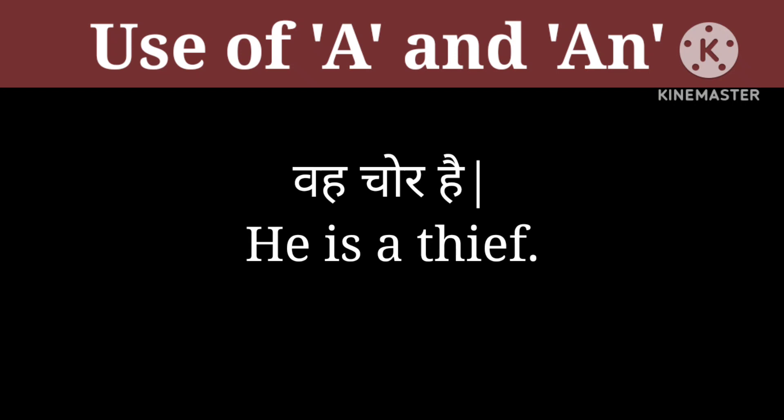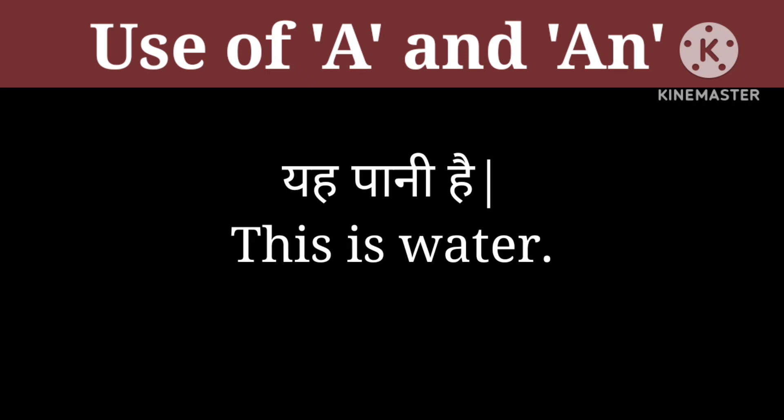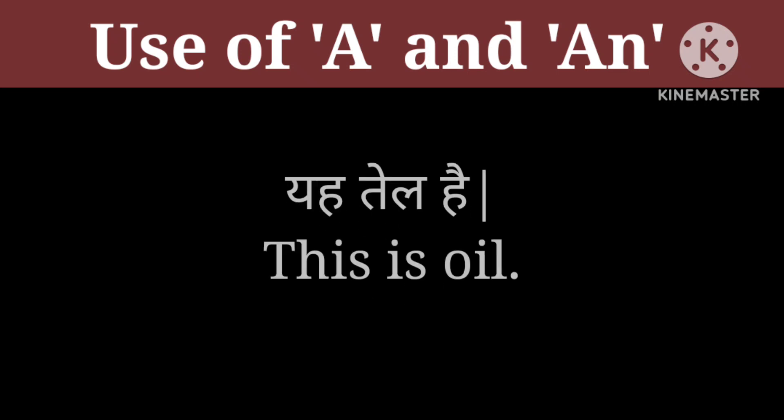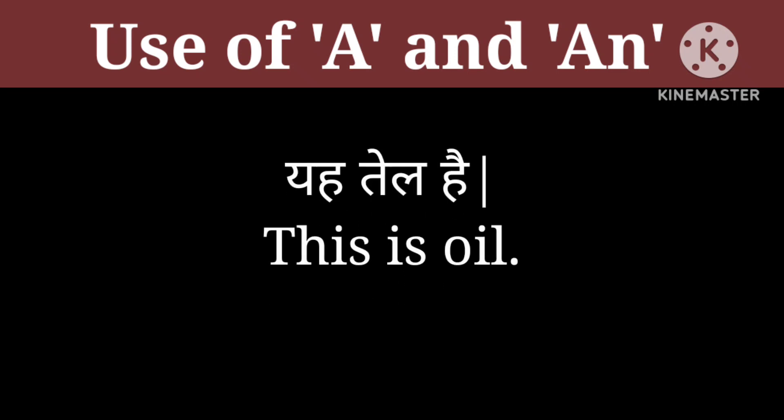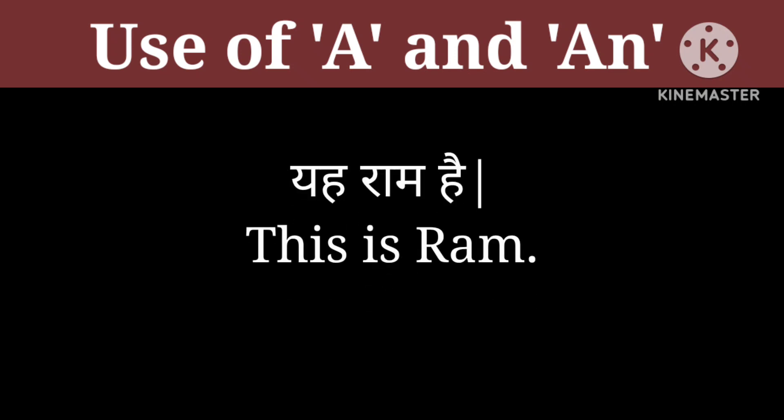Wah chor hai — He is a thief. Yah paani hai — This is water. Yah tel hai — This is oil. Note that 'water' and 'oil' are uncountable nouns, so we do not use 'a' or 'an' before them.